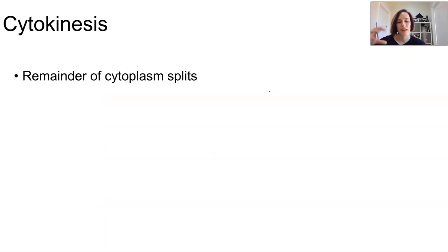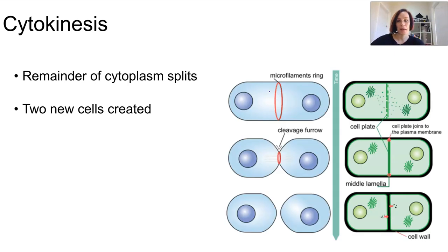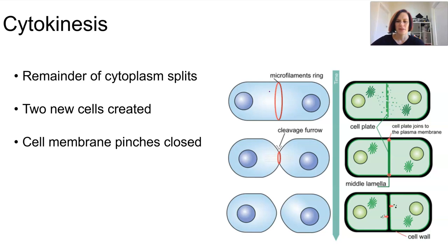The final stage of cell division is cytokinesis, which involves the rest of the cell splitting to create the two new cells. Mitosis deals with just the nuclear contents, while cytokinesis must separate the cytoplasm and take the organelles with it as well. In animal cells, the outer cell membrane pinches together and encloses around each new cell, but in plant and fungal cells a new cell wall must also be built.